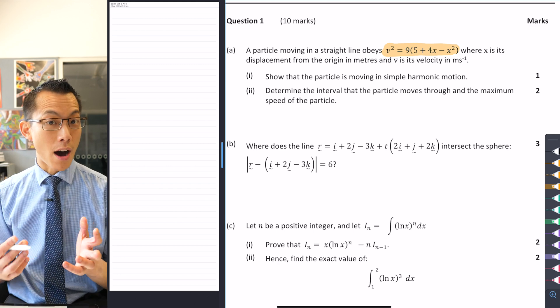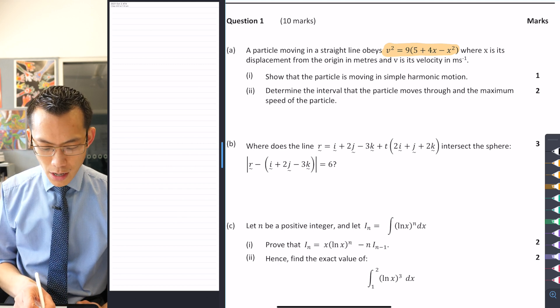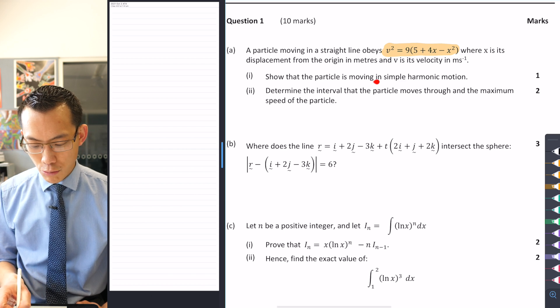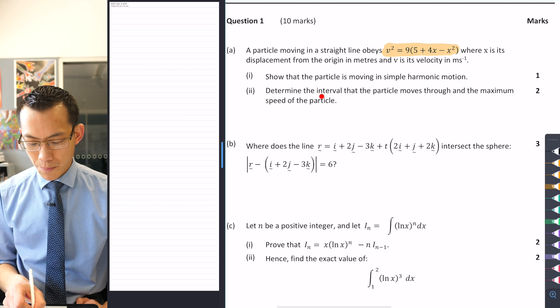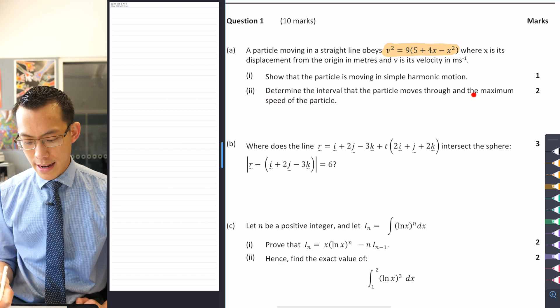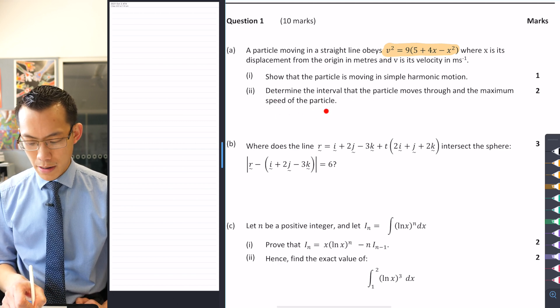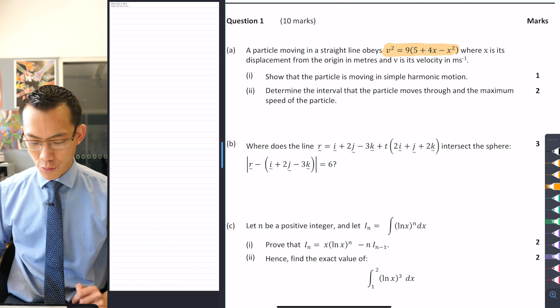What is the question actually asking of us? Part one, show that the particle is moving in simple harmonic motion and then subsequently determine the interval that the particle moves through and the maximum speed of the particle. All right, so let's just make note of that before we go any further.